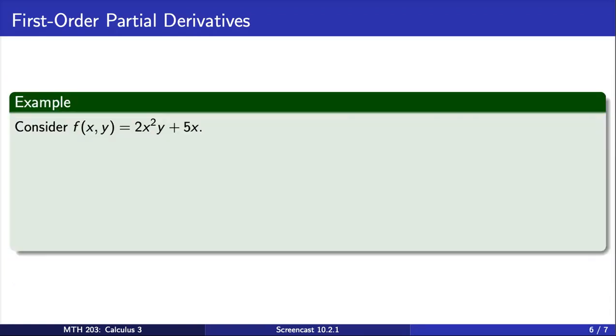For example, consider this function f. To obtain the partial derivative of f with respect to x, we treat y as a constant and take the derivative of the expression with respect to x alone. In doing this, we get this as the first order partial derivative of f with respect to x.